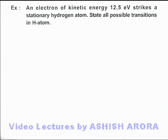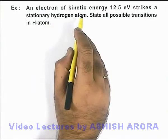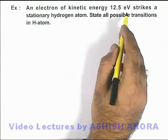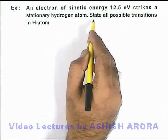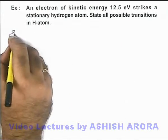In this example, an electron of kinetic energy 12.5 electron volts strikes a stationary hydrogen atom. We are required to state all possible transitions in the hydrogen atom.